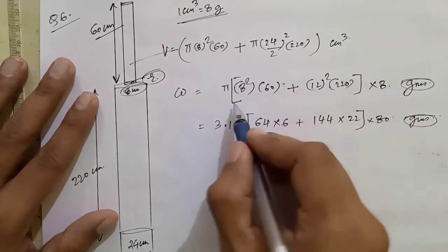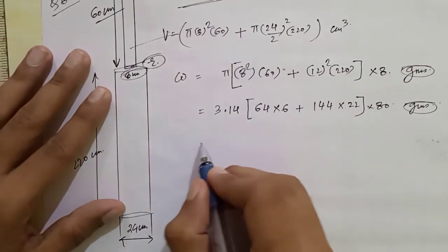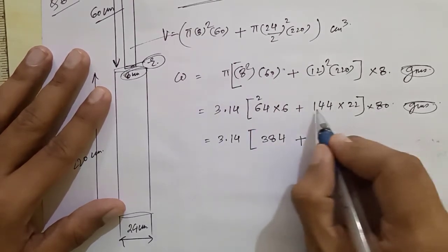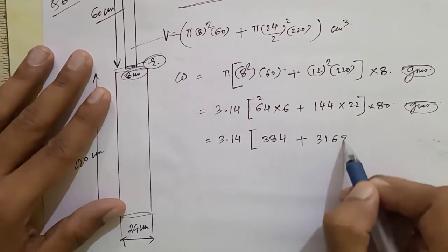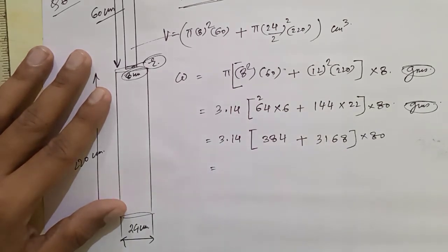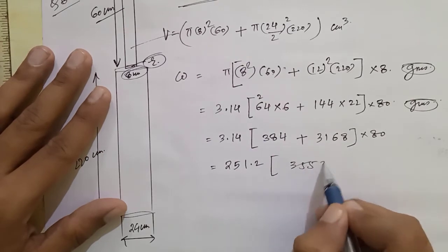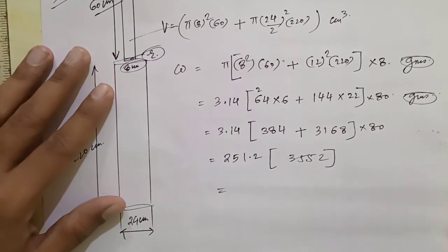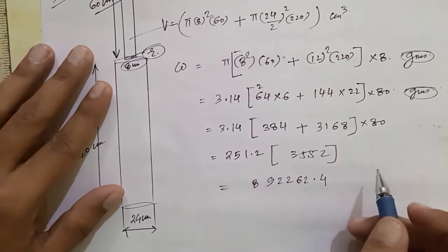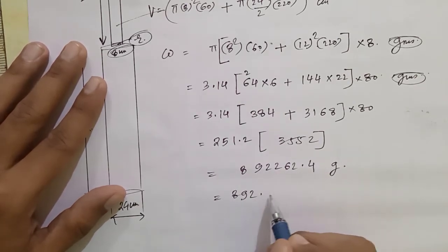After taking π common and putting π = 3.14, we factor out 10 and calculate: 3.14 × (384 + 22 × 144) = 3.14 × (384 + 3168) = 3.14 × 3552. Then 3.14 × 80 = 251.2, and adding up gives 3552. Finally multiplying gives 892262.4 grams. Converting to kilograms by shifting 3 decimal places: the answer is 892.26 kg.